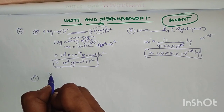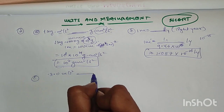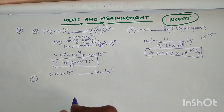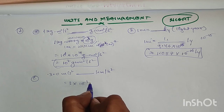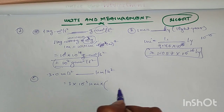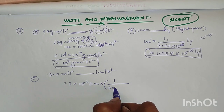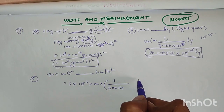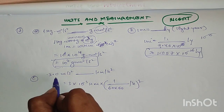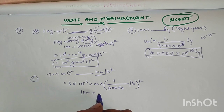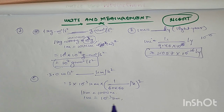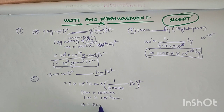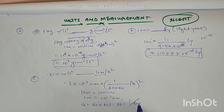Next, question C: 3.0 meters per second squared is to be converted into kilometers per hour squared. Here, 1 kilometer equals 1000 meters, so 1 meter equals 10 to the power of minus 3 kilometers. Also, 1 hour equals 60 into 60 seconds, so 1 second equals 1 divided by 3600 hours.